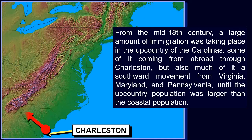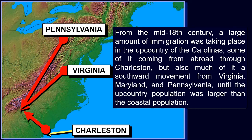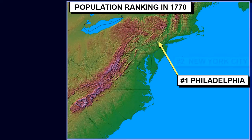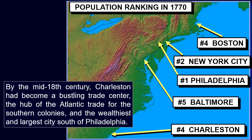From the mid-18th century, a large amount of immigration was taking place in the upcountry of the Carolinas, some coming from abroad through Charleston, but also much a southward movement from Virginia, Maryland, and Pennsylvania, until the upcountry population was larger than the coastal population. The upcountry people were viewed by Charlestonians as unpolished and had different interests, setting the stage for several generations of conflicts between the upcountry and the Charleston elite. By the mid-18th century, Charleston had become a bustling trade center, the hub of the Atlantic trade for the southern colonies, and the wealthiest and largest city south of Philadelphia.